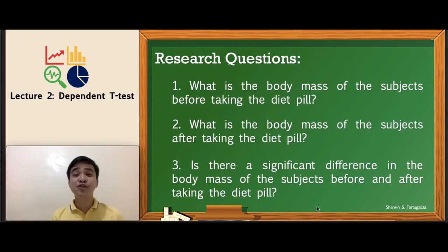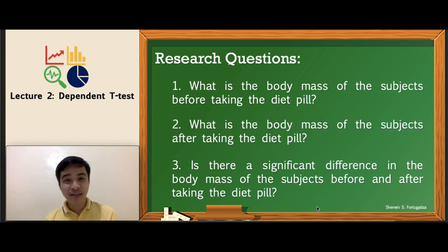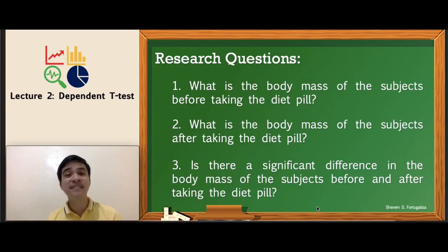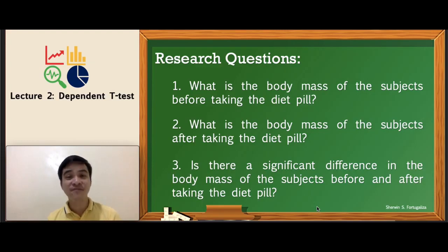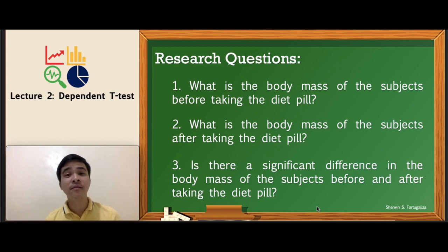In this scenario, a researcher will take the body mass of participants before and after taking the newly developed diet pill. If you want to develop your research questions, it is suggested to reflect on descriptive questions first before inferential ones. Question one: what is the body mass of the participants before taking the pill? Question two: what is the body mass after taking the pill? Question three: is there a significant difference in the body mass of the participants before and after taking the pill? The objective is to determine if the diet pill will significantly reduce the body mass of the participants.